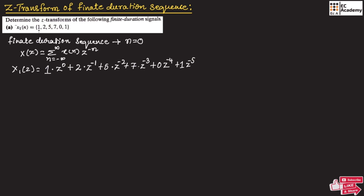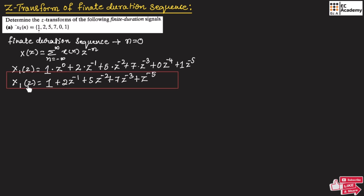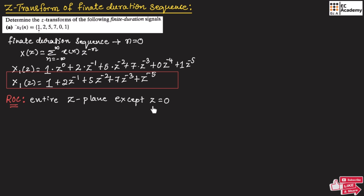Simplifying, X1(z) = 1 + 2z^(-1) + 5z^(-2) + 7z^(-3) + z^(-5). This is the Z-transform for the given sequence. Now, the ROC is the entire Z-plane except Z=0, since the sequence is finite duration starting at n=0.